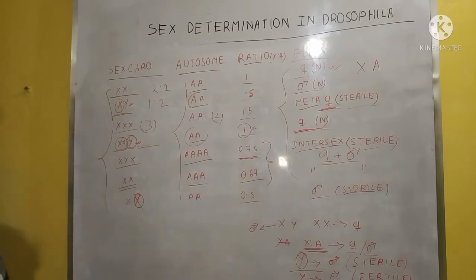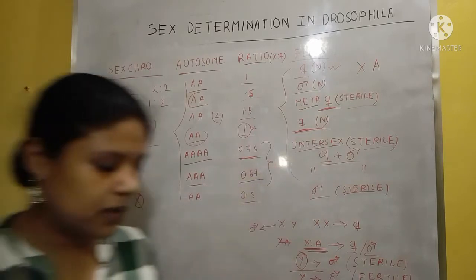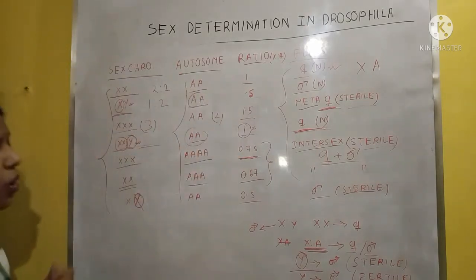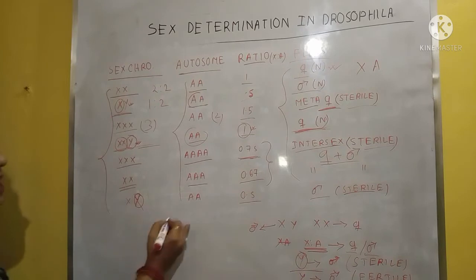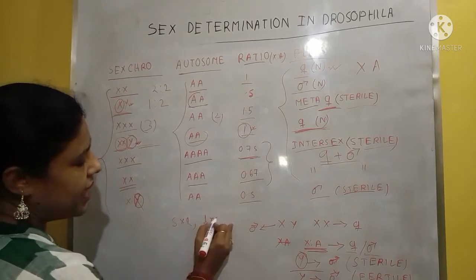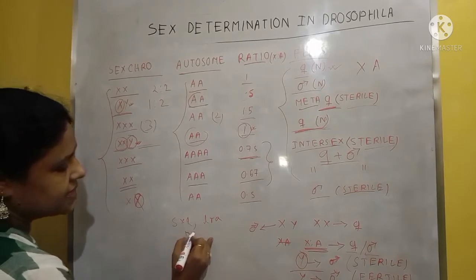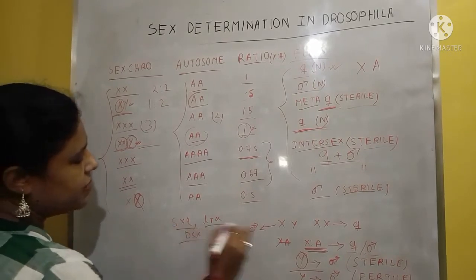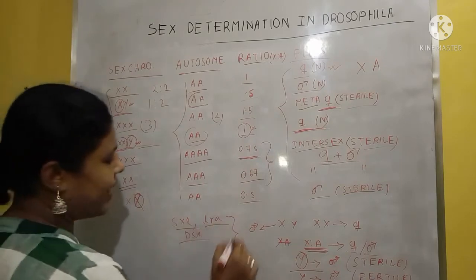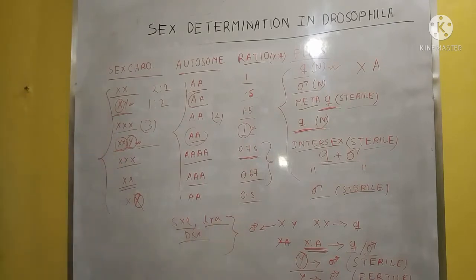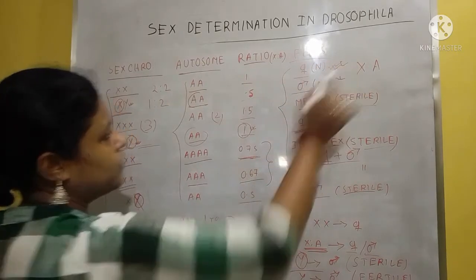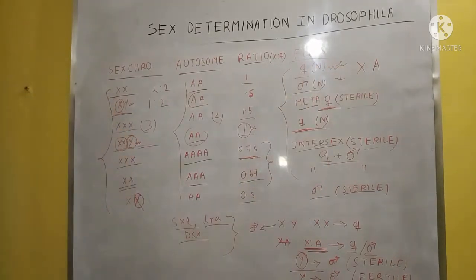So these are the ratios of the X and A chromosomes that show normal female, metafemale, intersex, or male in Drosophila. Now we know about the role of three genes: SXL, tra, and DSX. These are the main important factors that help determine female or male Drosophila.